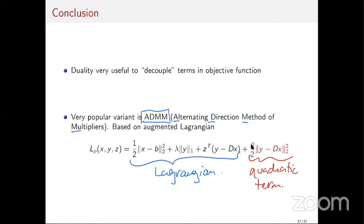In ADMM, you use the augmented Lagrangian, which adds a quadratic term rho/2 * ||y - Dx||^2 to the Lagrangian with relaxation parameter rho > 0. The algorithm iteratively updates: x^{k+1} by minimizing L_rho over x (holding y^k, z^k fixed), then y^{k+1} by minimizing L_rho over y (holding x^{k+1}, z^k fixed), and then a dual update step for z.